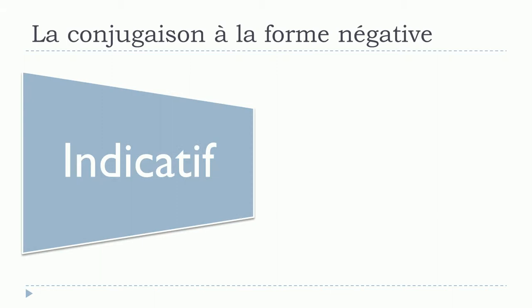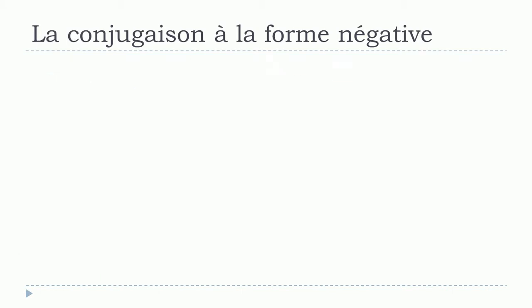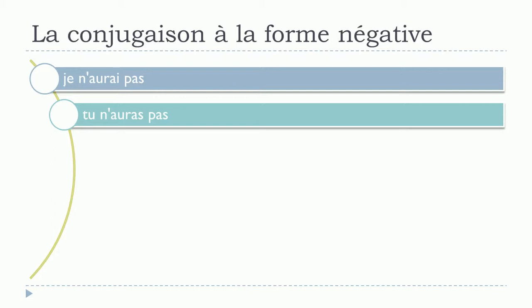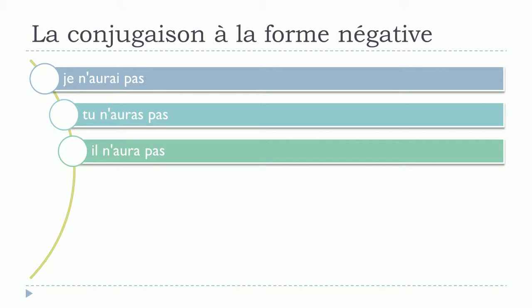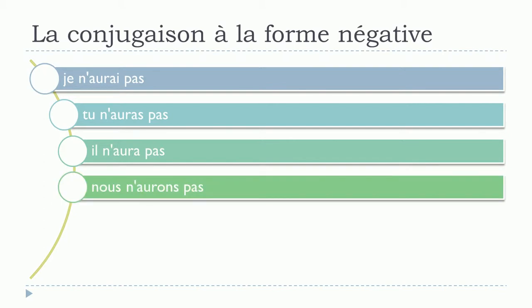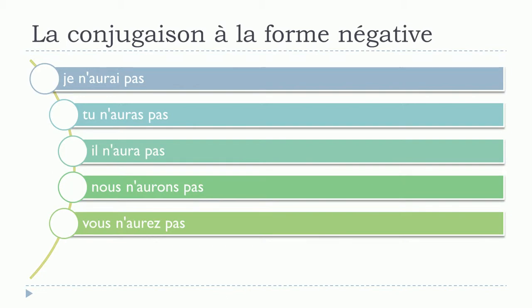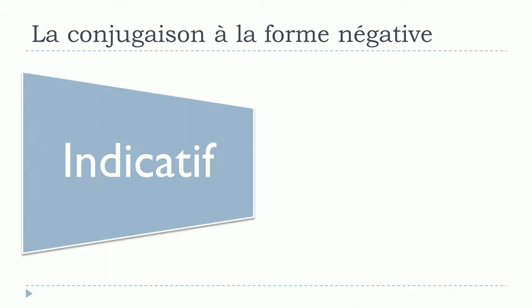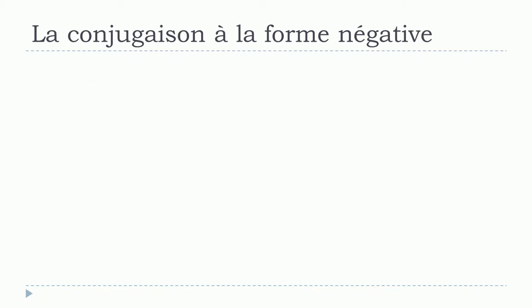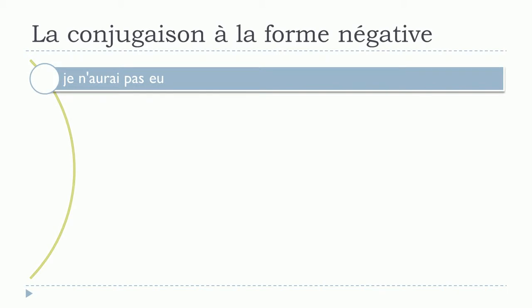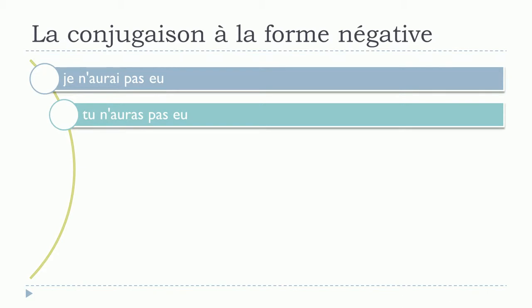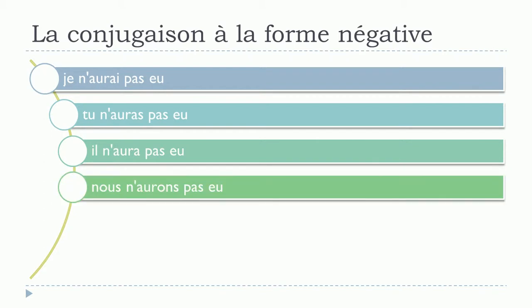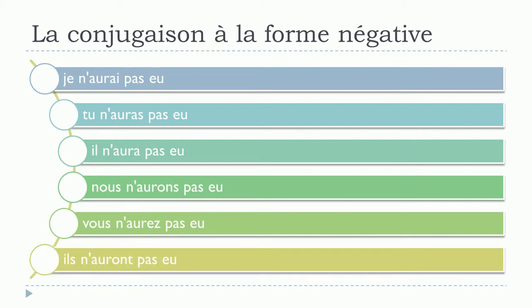And then let's discover indicatif futur simple. Vous n'aurez pas. Ils n'auront pas. Indicatif futur antérieur. Je n'aurai pas eu. Tu n'auras pas eu. Il n'aura pas eu. Nous n'aurons pas eu. Vous n'aurez pas eu. Ils n'auront pas eu.